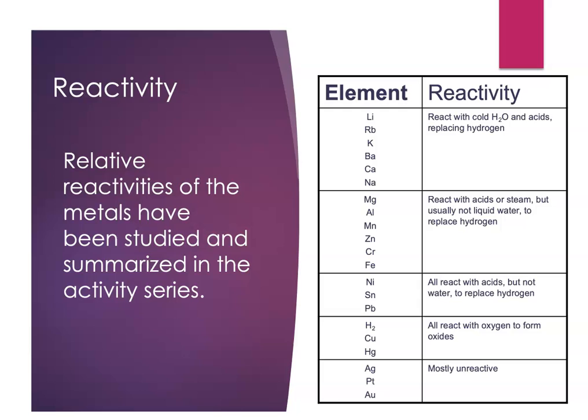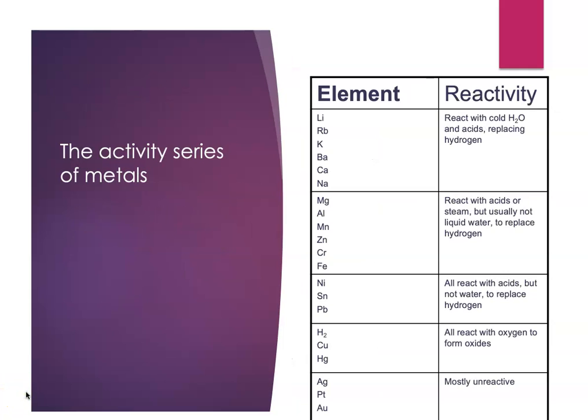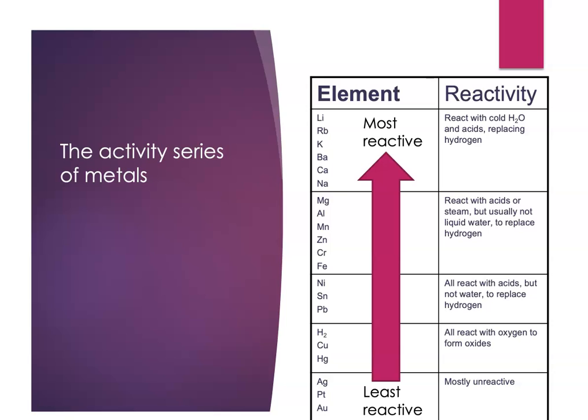We have a version of it here. Now no one expects you to memorize this. You'll always be given the activity series when you need to use it. The activity series summarizes a lot of reactions comparing the reactivities of metals. The way it's set up is that our least reactive metals are down at the bottom of the table. You'll notice silver, platinum, gold, elements that we use a lot in jewelry. You don't want your jewelry reacting with your skin. And then the most reactive elements are at the top of the table.